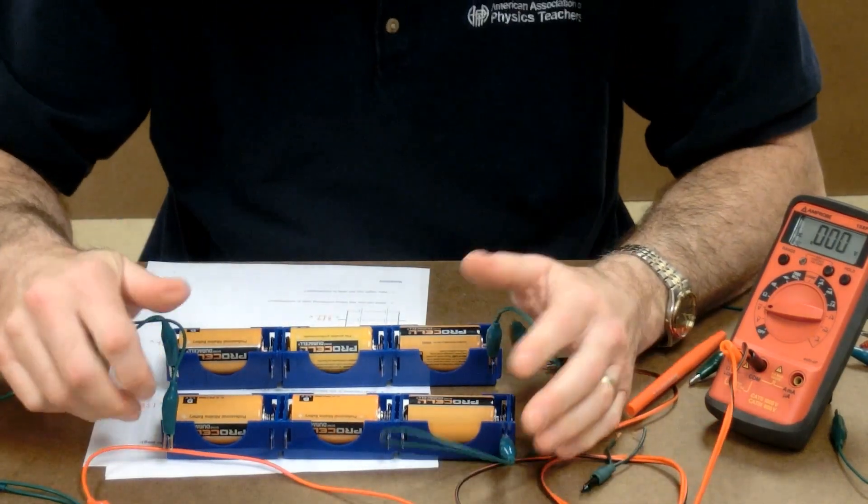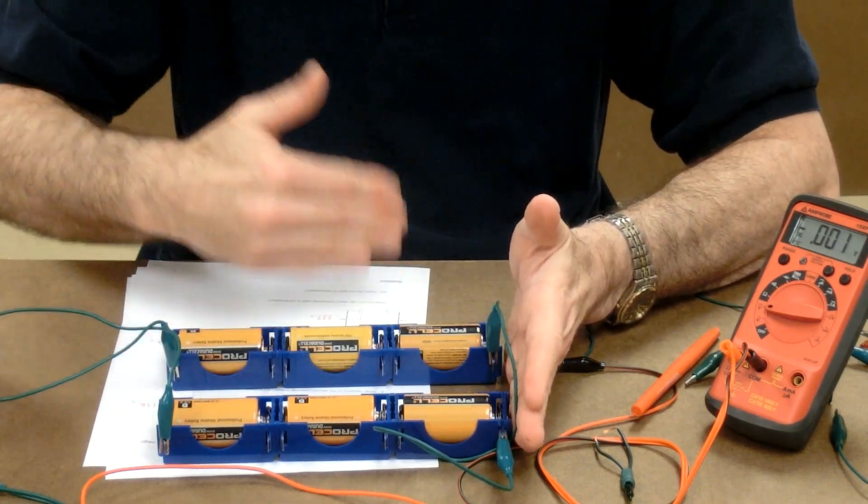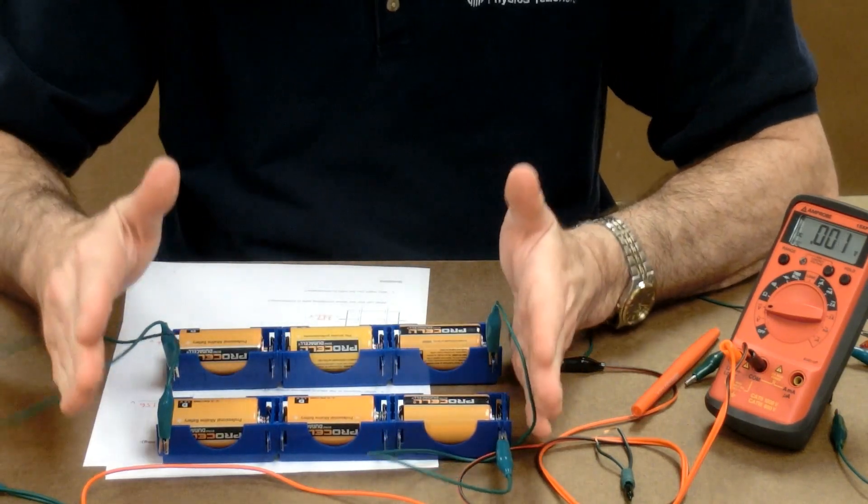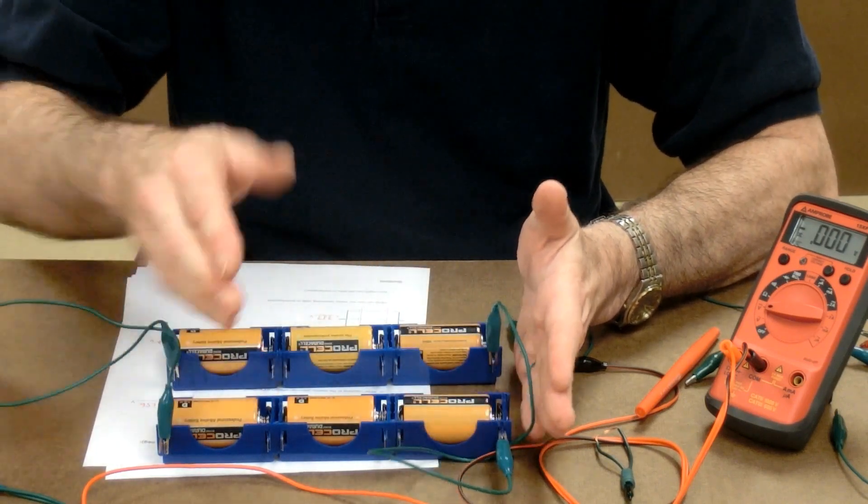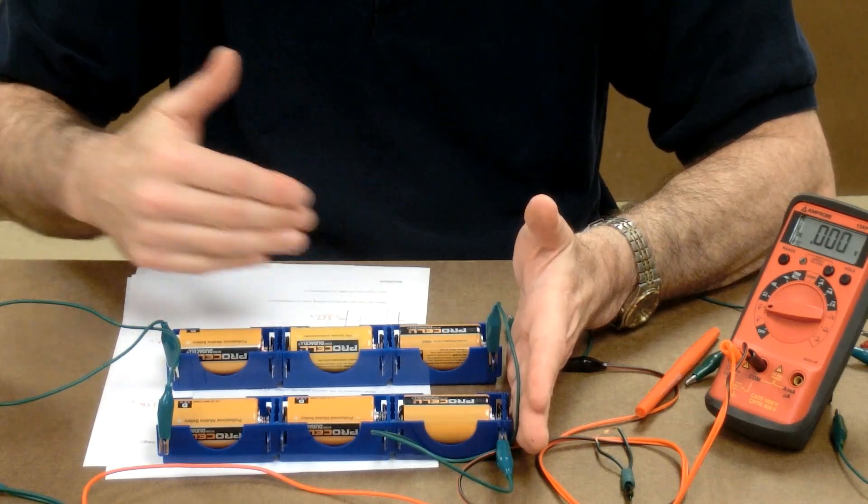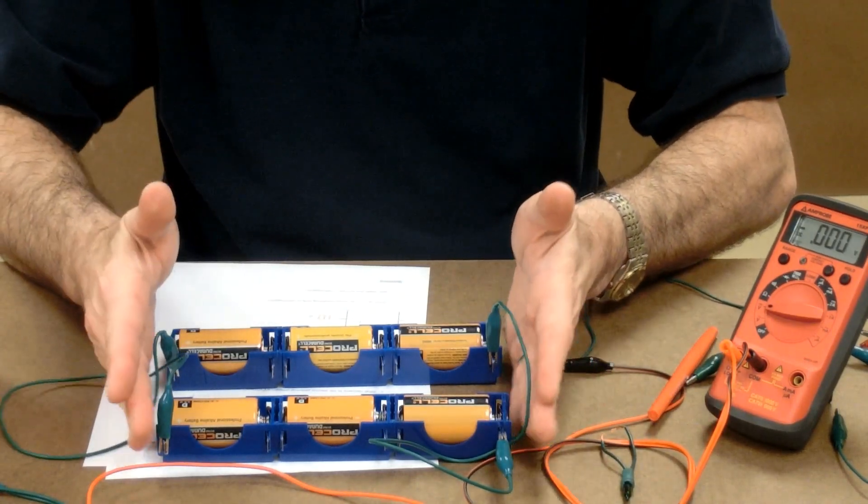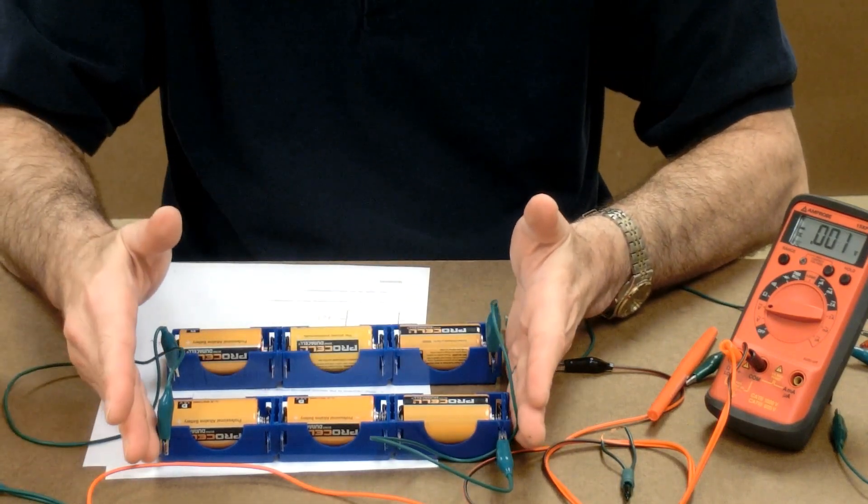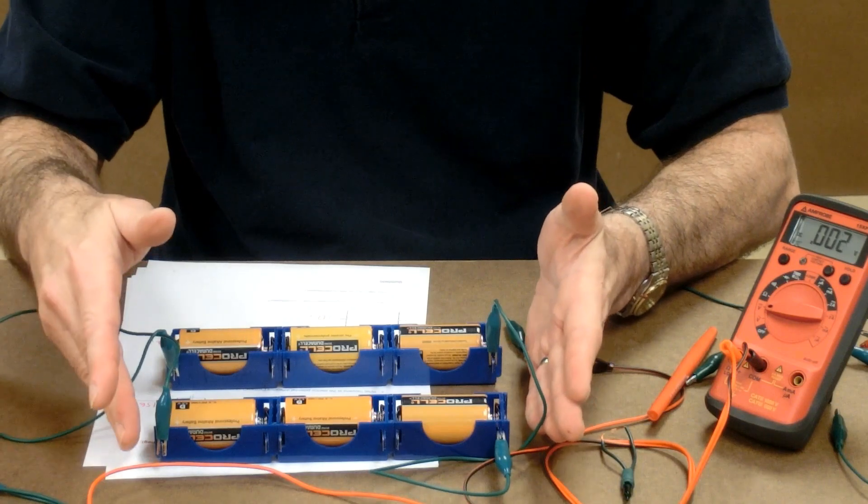So, whenever we put cells in combination where there's series with parallel branches, the voltage of the battery is the voltage of any one branch where they add together in series. Adding another branch doesn't change our voltage. So, having these six cells with two rows of three gives us the same voltage as just three would be, the 4.8 volts, but it would last twice as long.